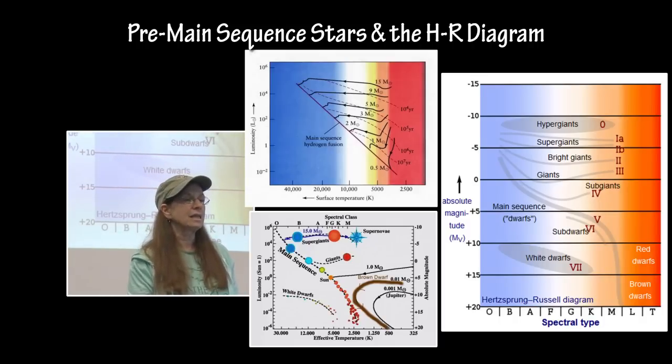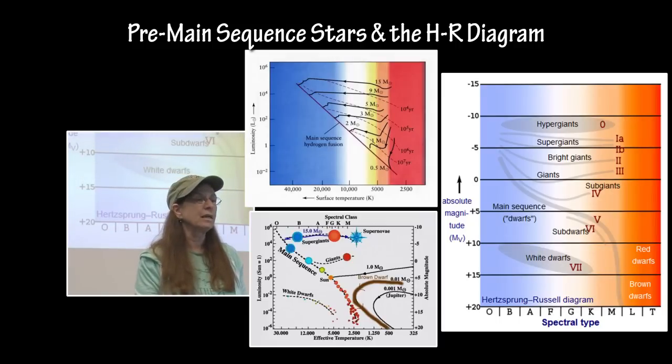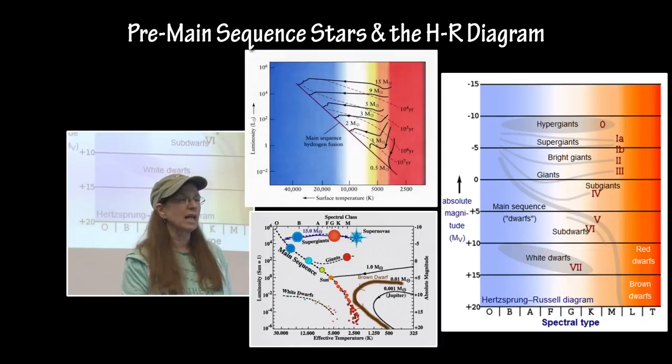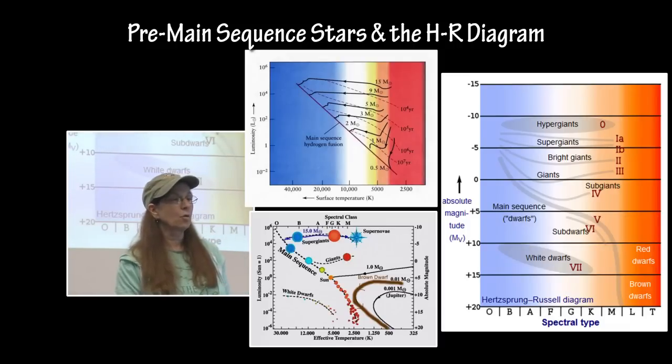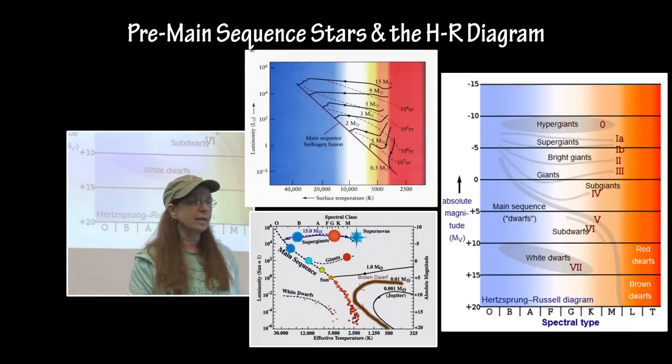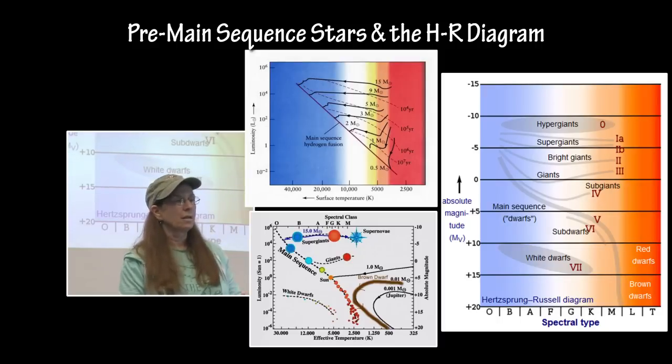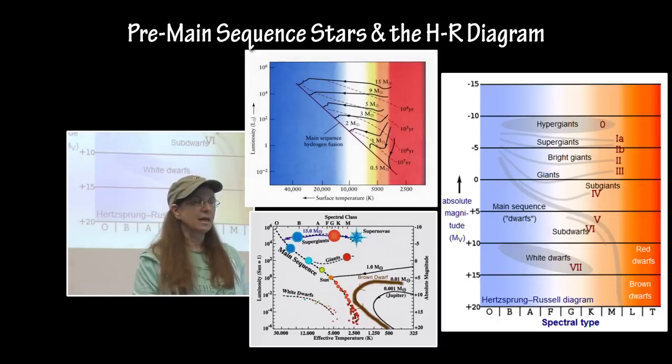On the right is the luminosity classes, but what I like about this particular one is that it shows the L and T spectral classes for the brown dwarf to show where they really belong on the HR diagram. Dealing with exoplanets and protostars and brown dwarfs, that is an important part of the HR diagram this year.